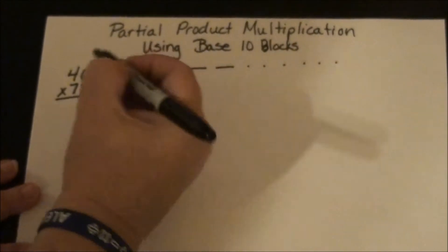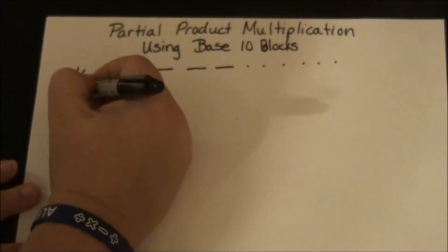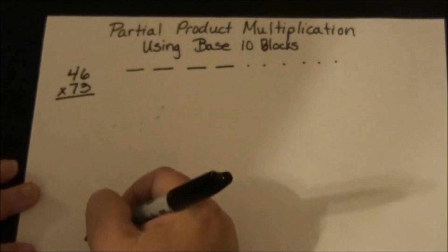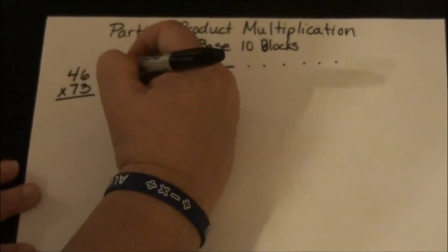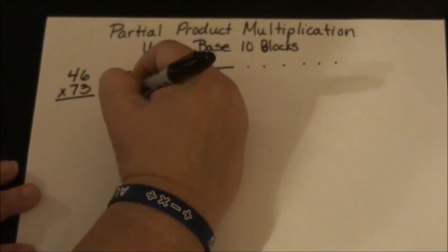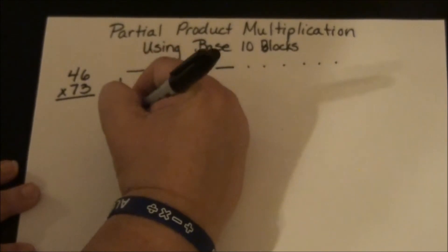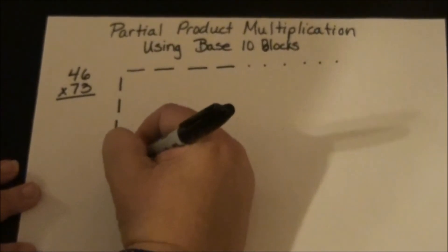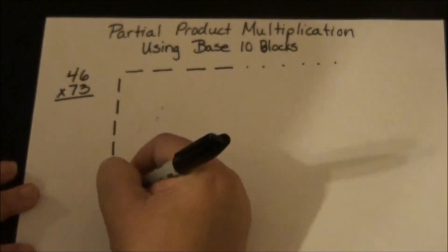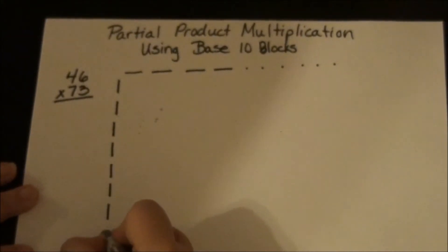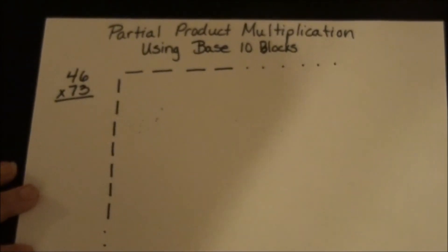The second number goes down the side, just like in an array. So there are going to be 7 tens — 1, 2, 3, 4, 5, 6, 7 — and then 3 ones: 1, 2, 3.